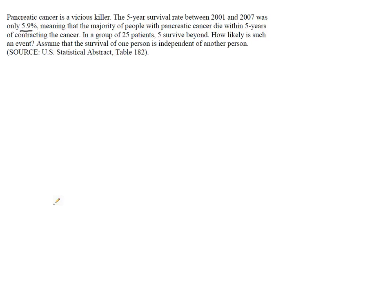We have a binomial experiment here with a probability of success of 5.9% — that's the probability that somebody survives. We have n equals 25 people, and x is keeping track of the number that survive, so the number of survivors.